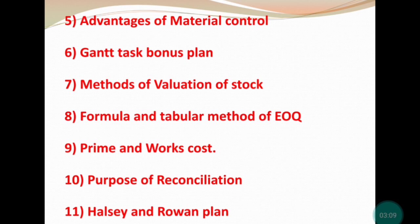Point number six is the Gantt task bonus plan — this is a very important question. Do not skip this question because it appears in every paper; you will find it in university papers from three to four years back. This question is in the labor costing chapter of the book.